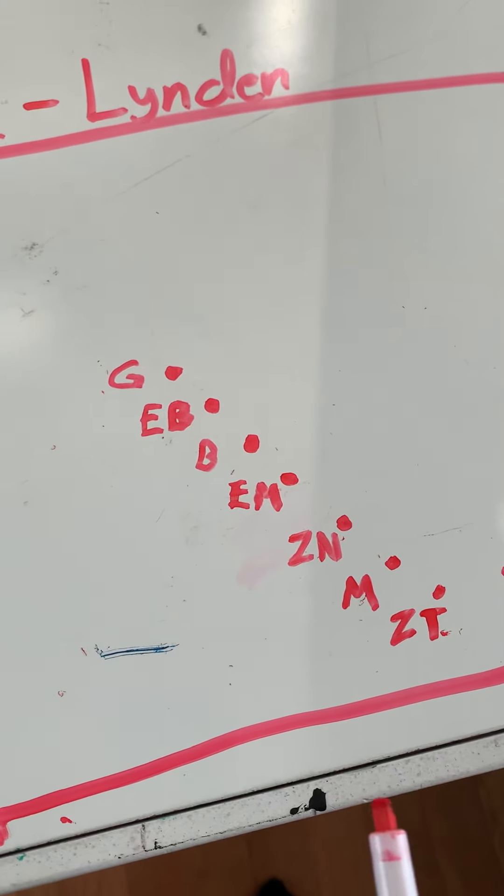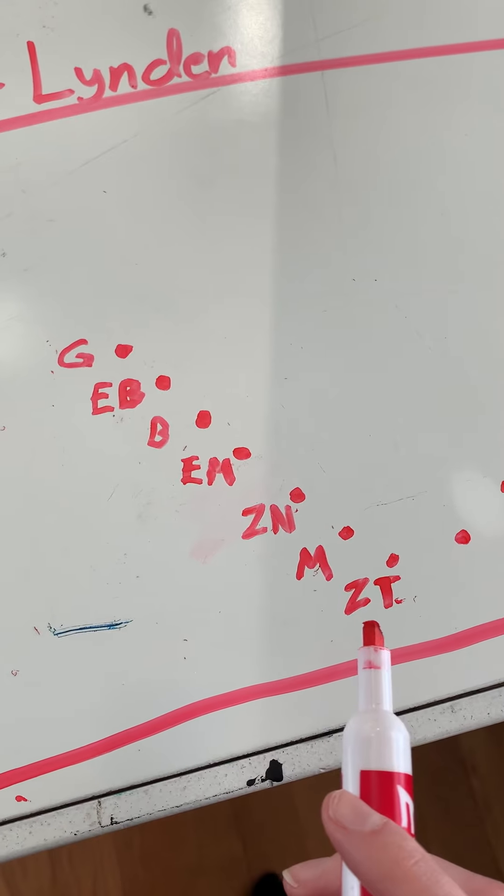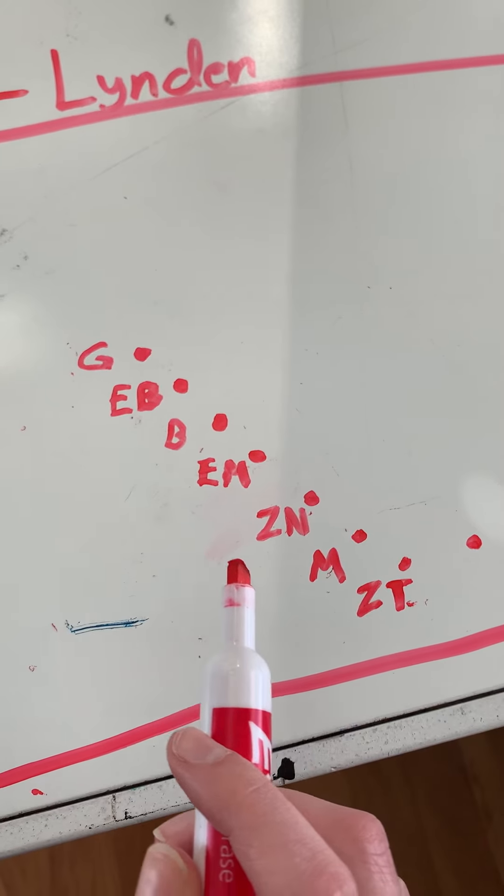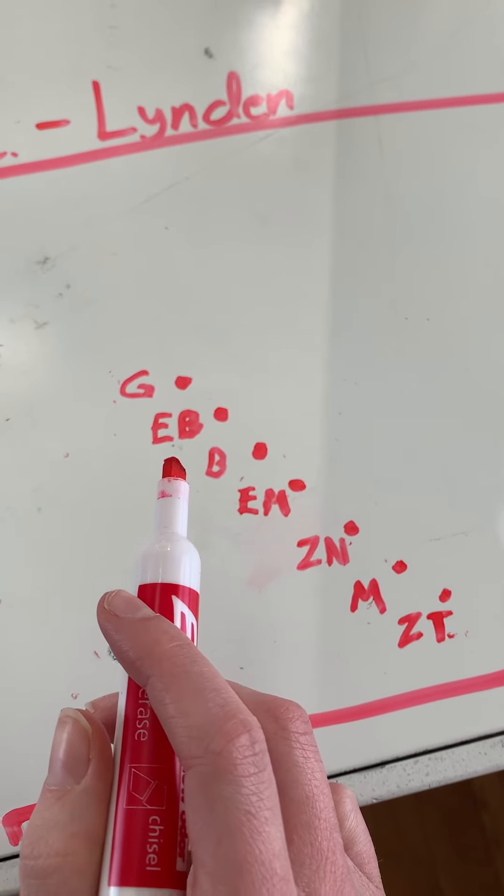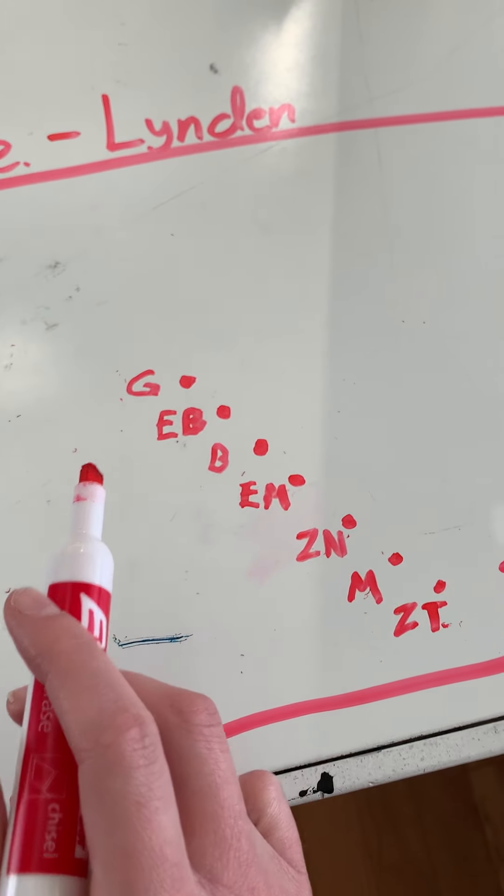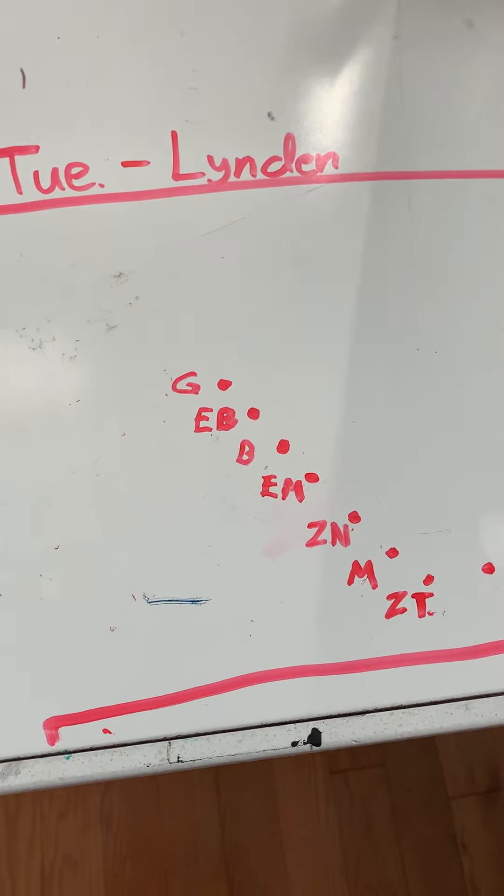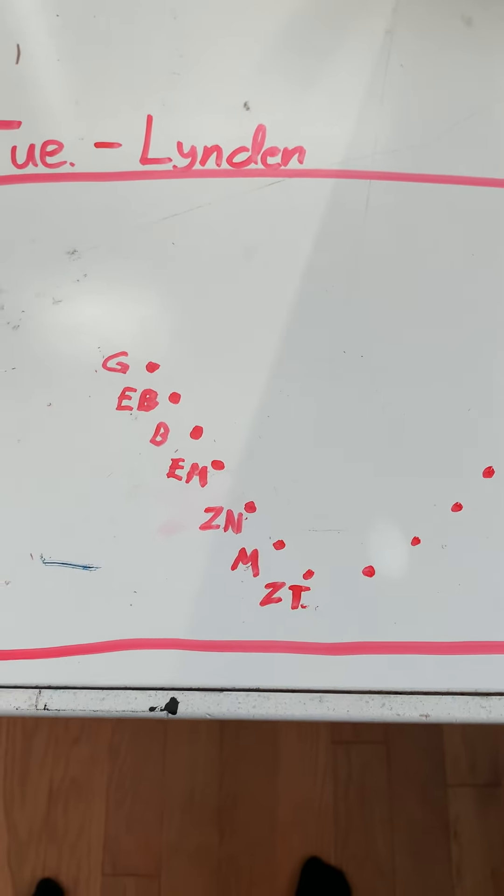These are your initials. So we have Zoe T, we have Madeline, Zoe N, we have Emily, we have Brooklyn, we have Ella and Genesis. So hopefully that'll make sense.